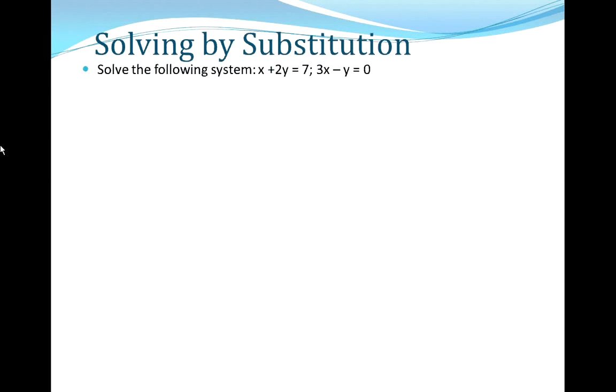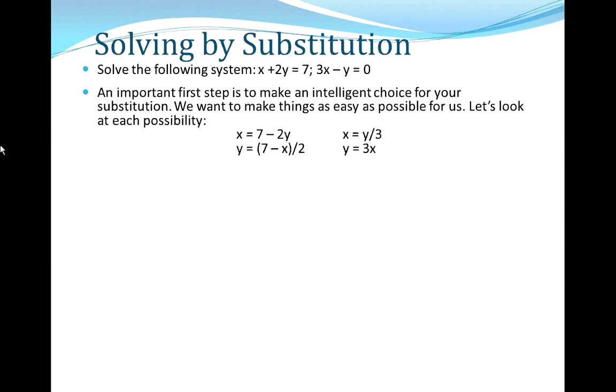Solve the following system: x plus 2y equals 7, 3x minus y equals 0. So here we have two equations, two unknowns. This is what I would call a simple system. An important first step is to make an intelligent choice for your substitution. We want to make things as easy as possible for us. So before we do the solving of this system, let's look at each possibility for a substitution.